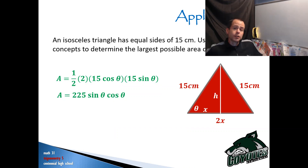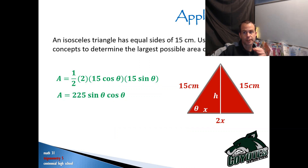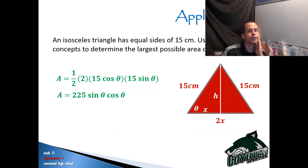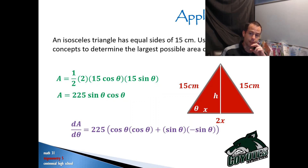I'm looking for the maximum point of this graph because that'll give me the maximum area. So I'm going to take the derivative and figure out my critical numbers, looking at where I'm changing from increasing to decreasing. You need to see this as the product rule. So for 225 sine theta cos theta: the derivative of sine theta is cos theta, giving cos theta cos theta, plus sine theta times negative sine theta. That simplifies to 225 times (cos squared theta minus sine squared theta).